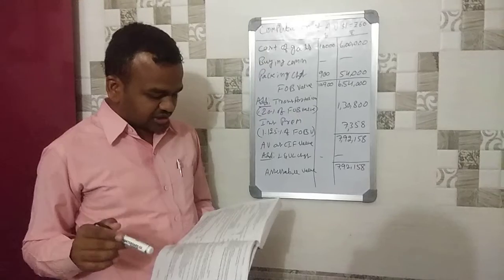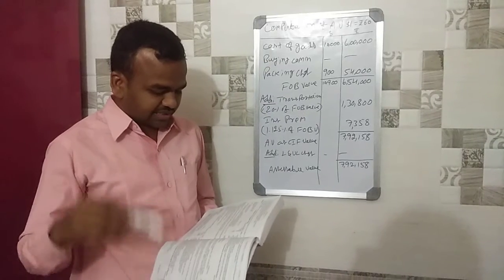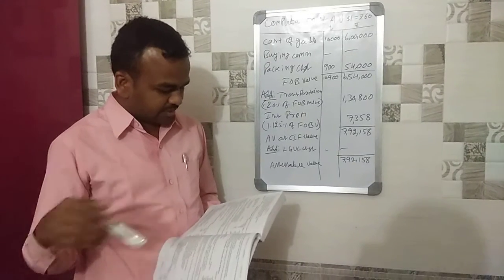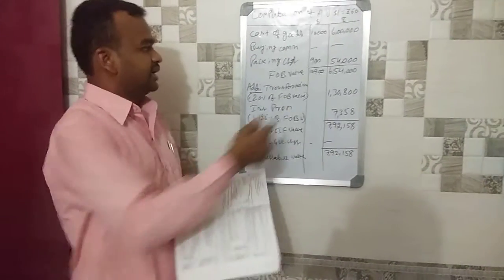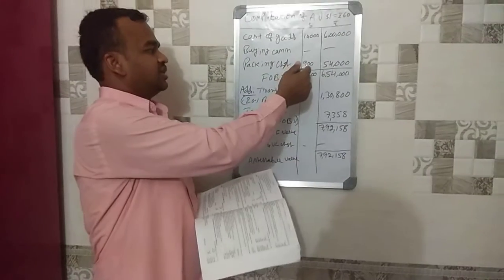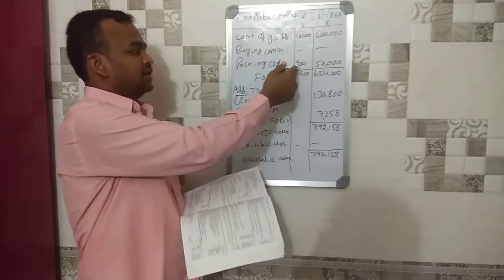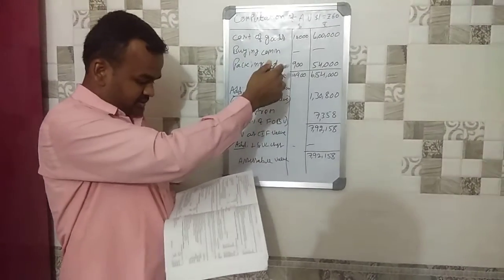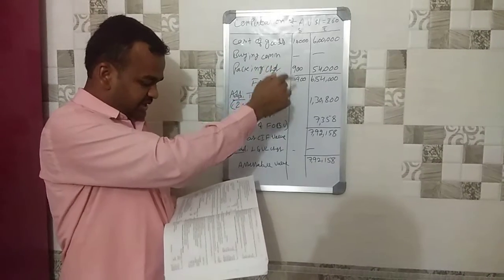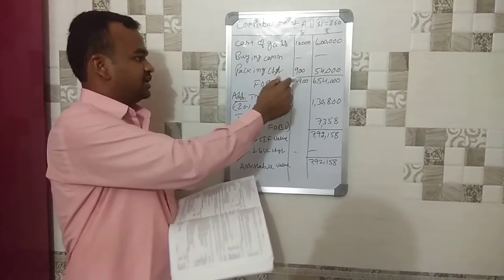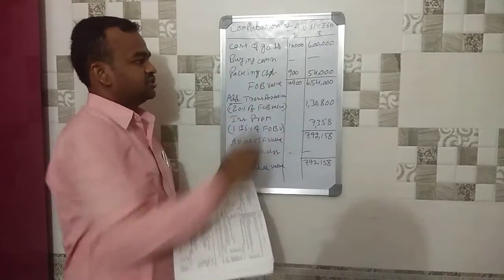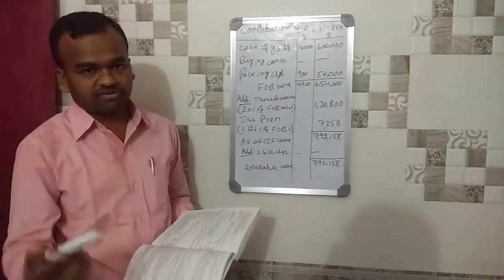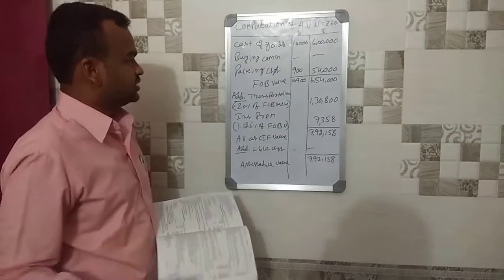Next, packing charges: containers five hundred dollars, packing materials one hundred dollars, labor three hundred dollars — total is nine hundred dollars. Converting at sixty rupees per dollar gives fifty-four thousand rupees. These packing charges are added to the assessable value.